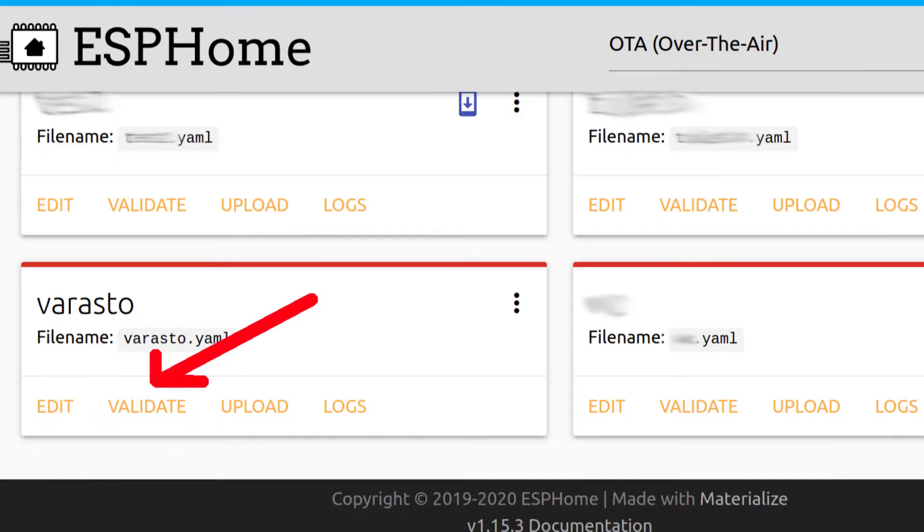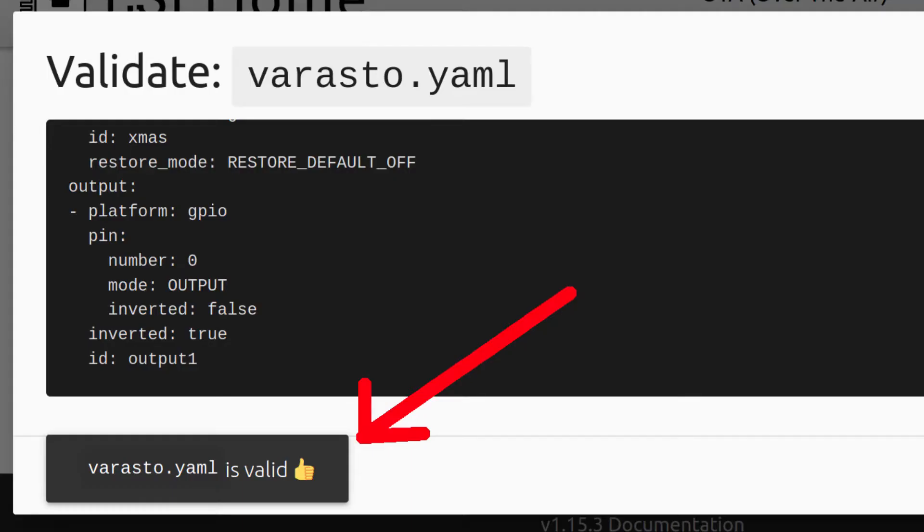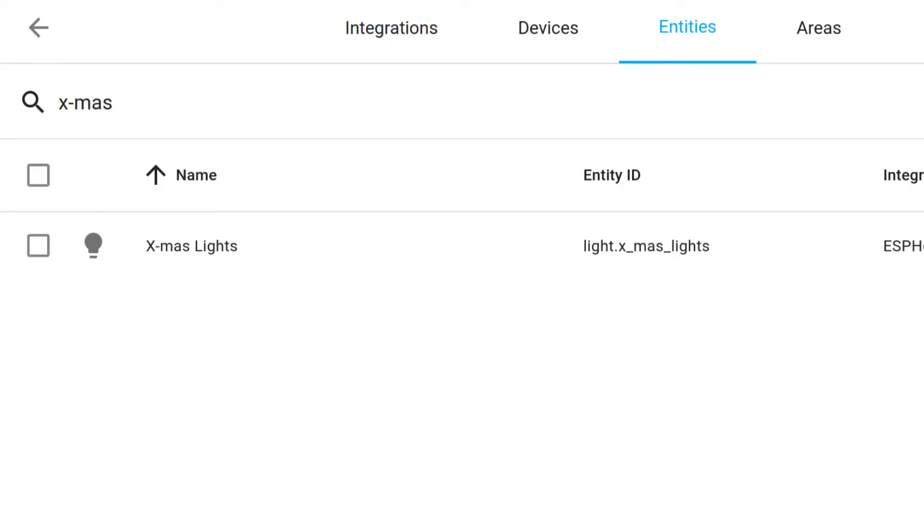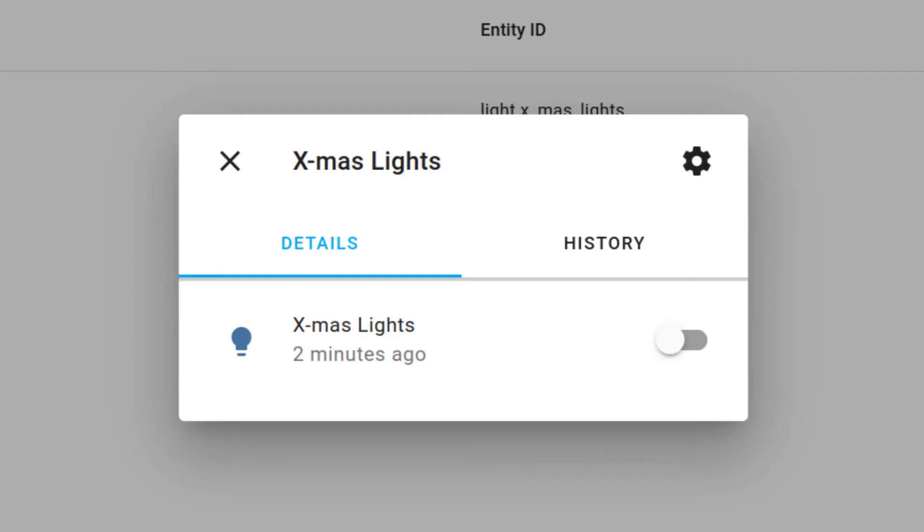Now you need to validate your configuration. And when it says that it's valid, press upload. When it's uploaded, go to your entities in Home Assistant and search for your new light. And here it is, ready for all kinds of cool automations.